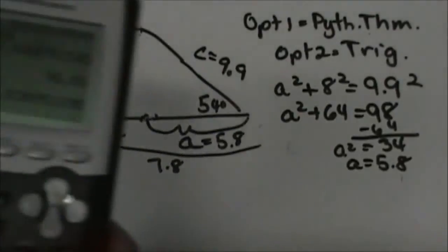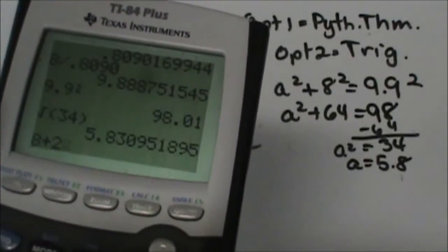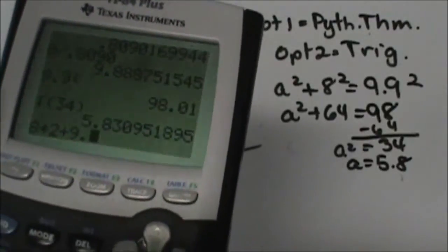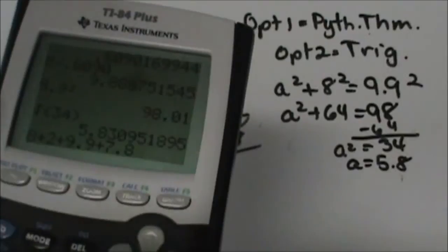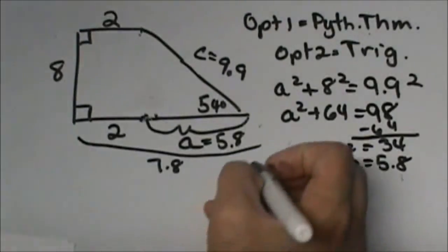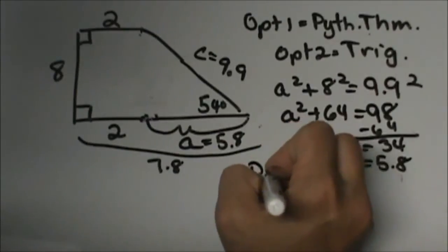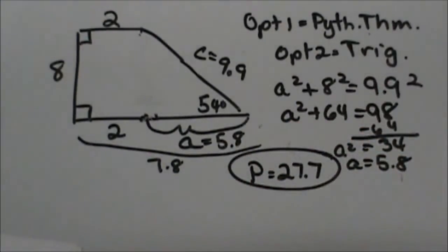So let's add all that together. I'm going to take 8 plus 2 plus 9.9 plus 7.8, and my final answer is 27.7. So the perimeter is 27.7, and that's how I would get that answer.